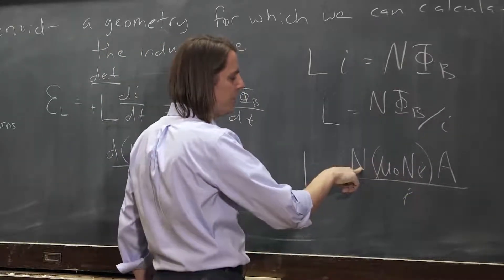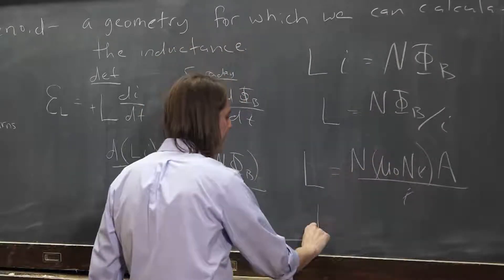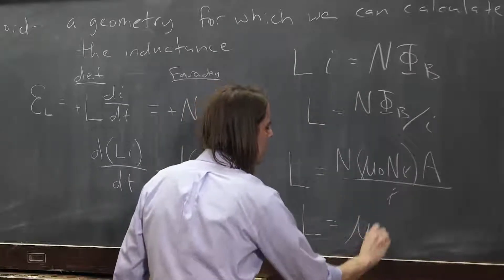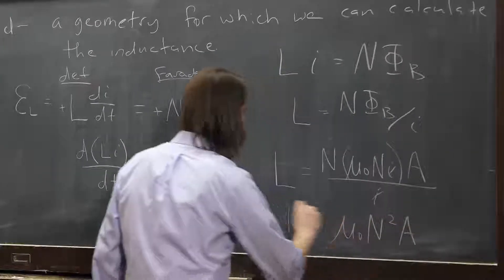We have n squared here, mu naught and A. So the inductance, then, for this ideal solenoid is mu naught, the total number of turns squared, times the area.